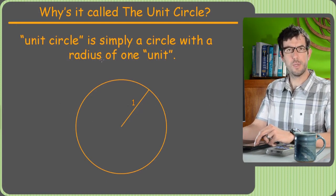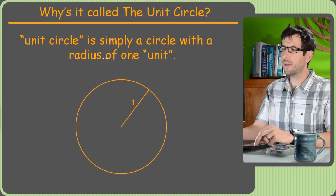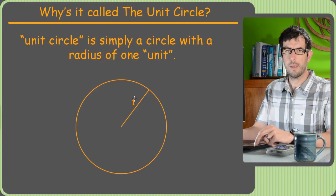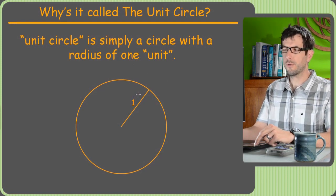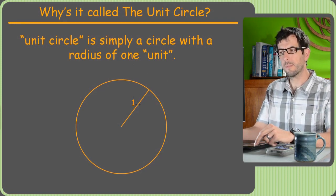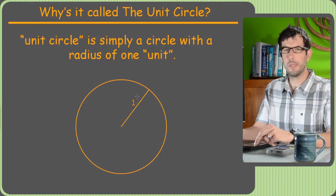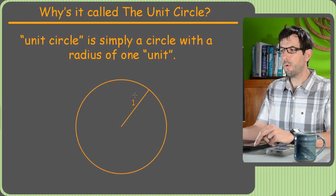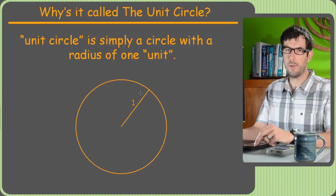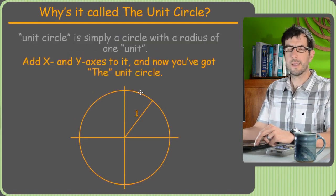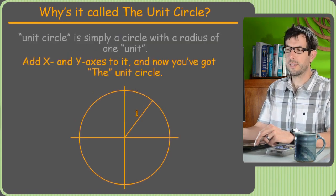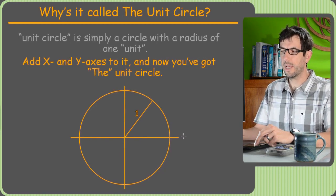A question I get a lot is: why is it called the unit circle? Well, that just means the radius is 1. A unit circle is a circle of radius 1 unit. We're not talking about meters or inches — they just call it units. What makes our special circle the unit circle is that we've placed it onto the xy axes you've seen in algebra before.